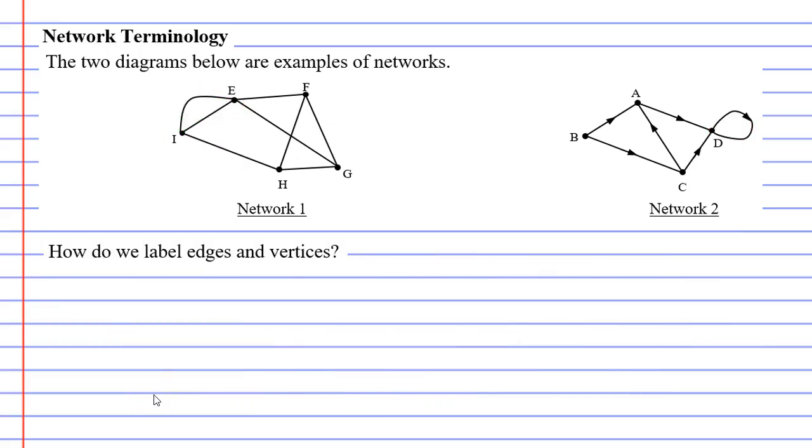Lastly we want to talk about how to label edges and vertices. Now we'll start with vertices or the vertex. We've already discussed how to label them. Usually they're labeled with capital letters but they don't have to be just labeled with capital letters they can be labeled with words as well. For example you might use the names of cities if the vertices represent cities.